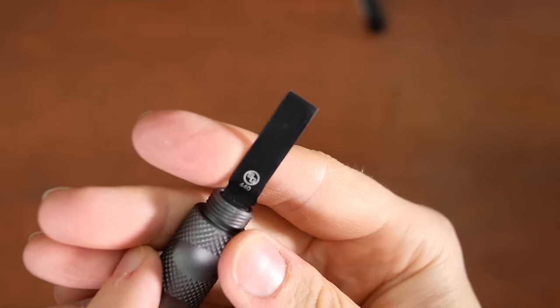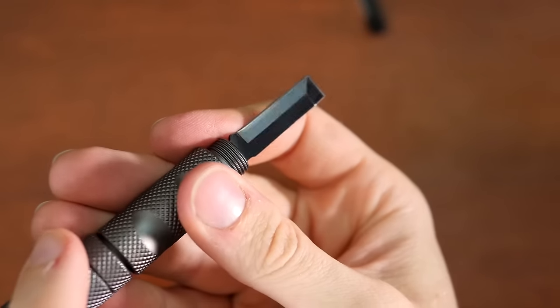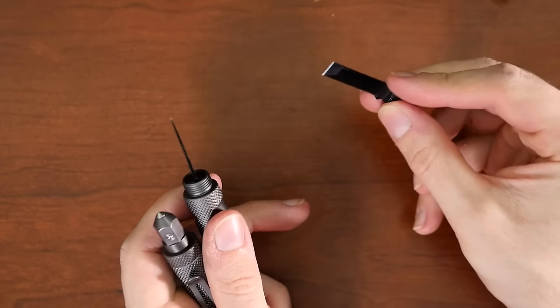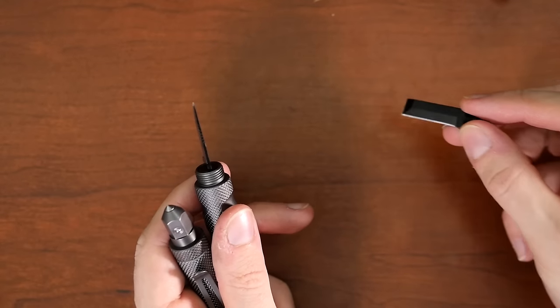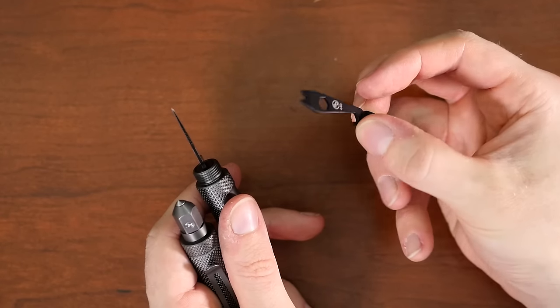This one is chisel ground. You can see flat on one side. And just got the edge bevel on the other side. I do like this blade here. This could, the scraper here, that could come in handy. That can be useful. Yeah.